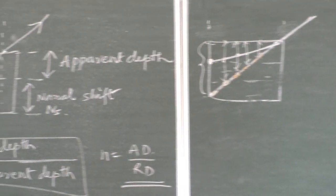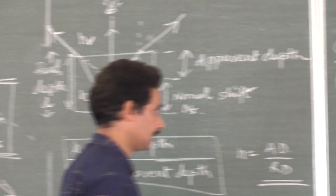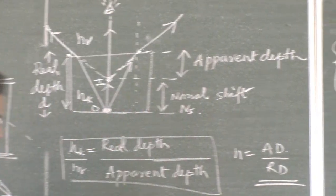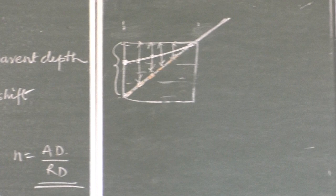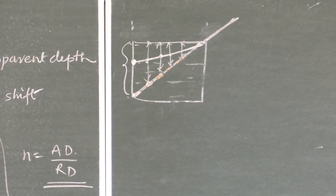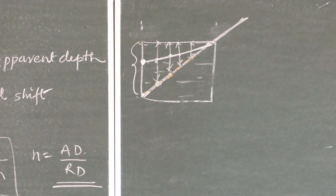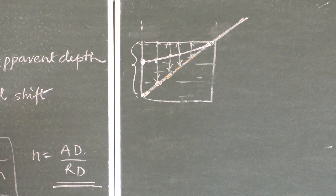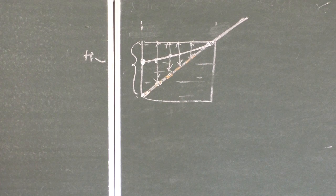Now another important concept is total internal reflection. Whenever a ray of light travels from a denser to a rarer medium, it bends away from the normal.